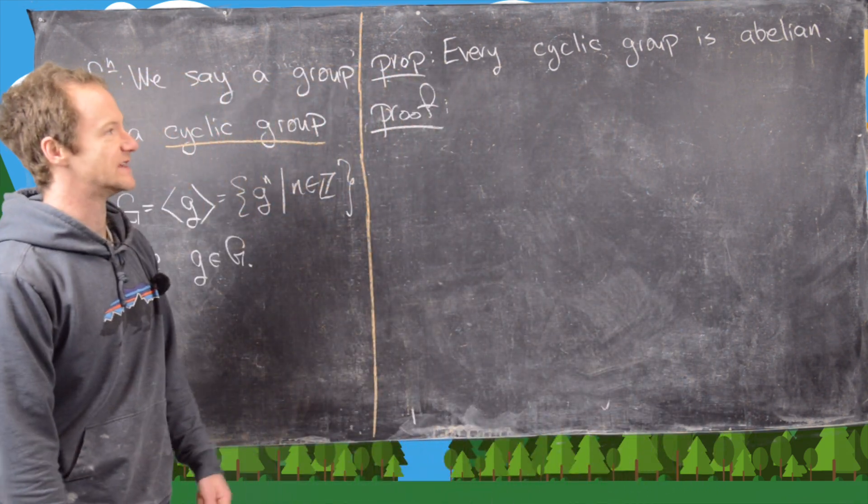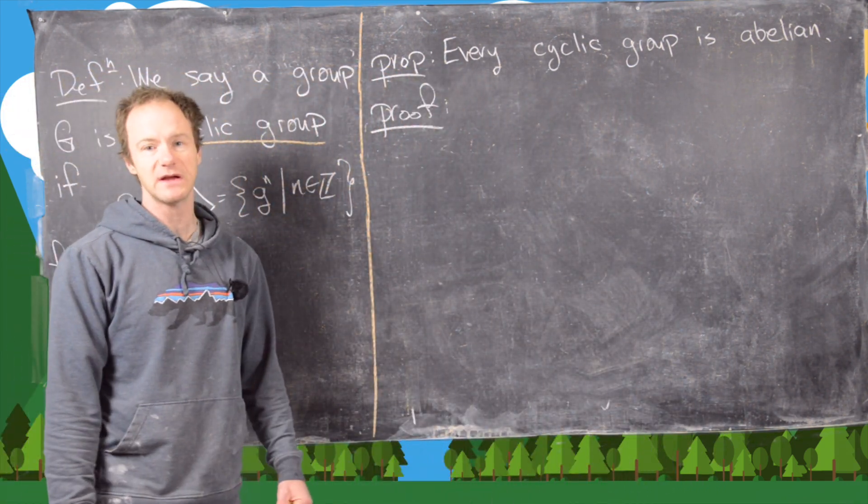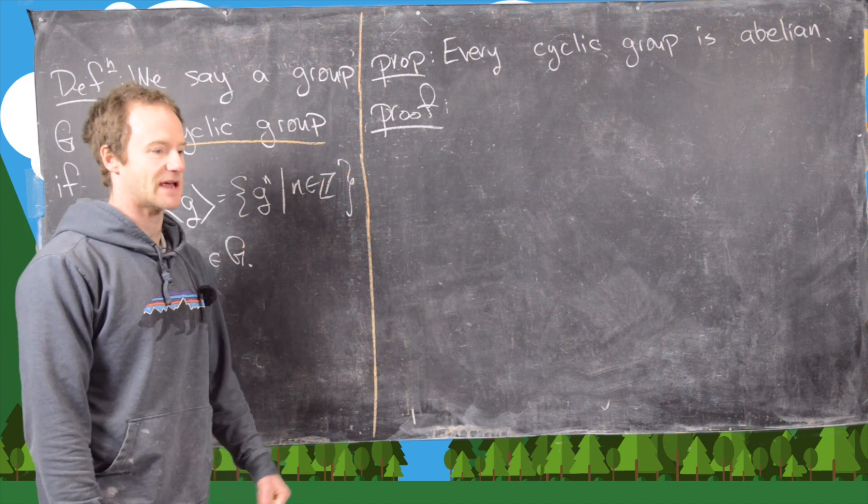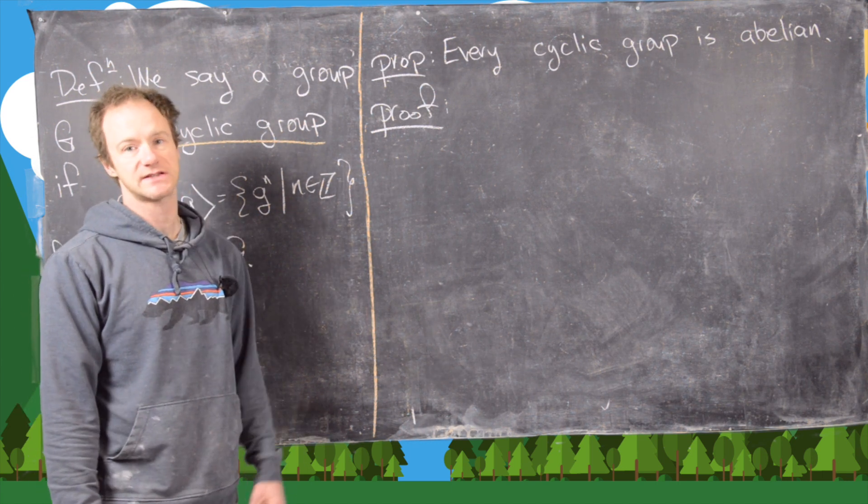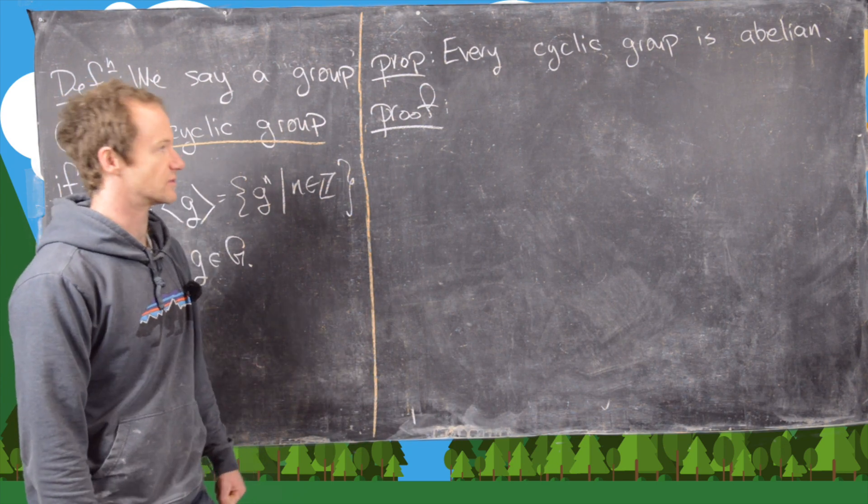The first thing that we want to prove is that every cyclic group is abelian, then we'll look at some examples of cyclic groups and non-cyclic groups, and then we'll look at the subgroups of a cyclic group.